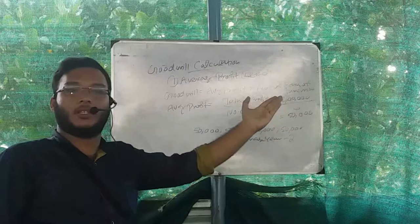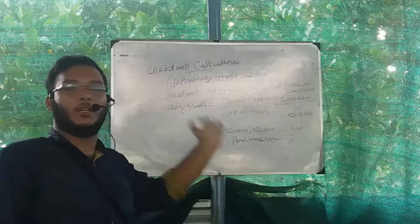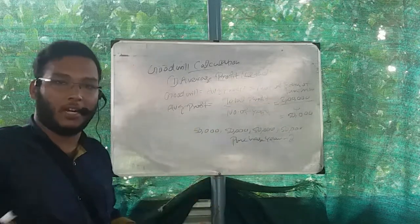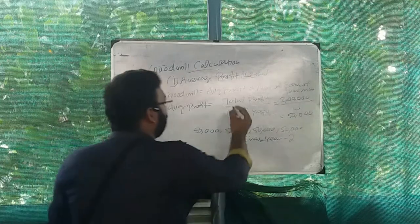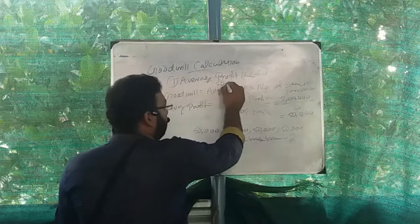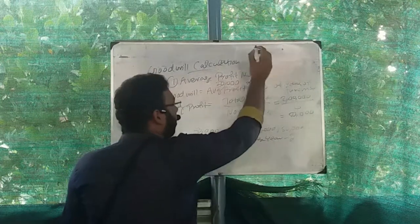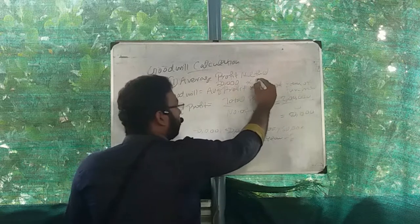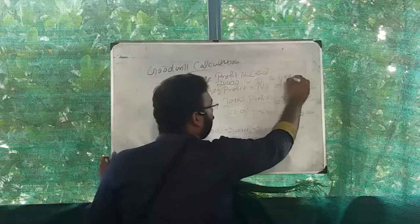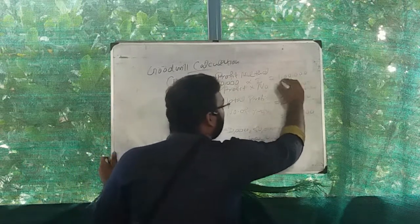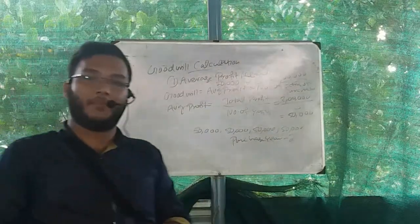We know that number of years is possible to get the average profit in the entire year. Then goodwill equals average profit of 50,000 into number of years purchase, which is 2. 50,000 into 2 equals 1 lakh. That is the goodwill of the firm.